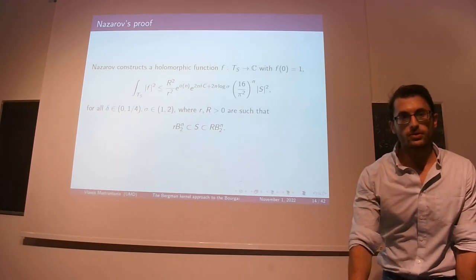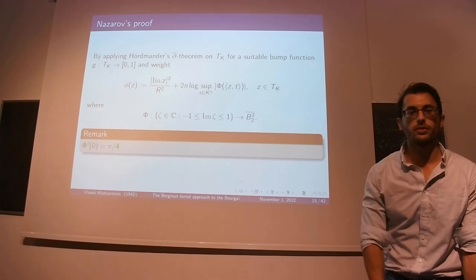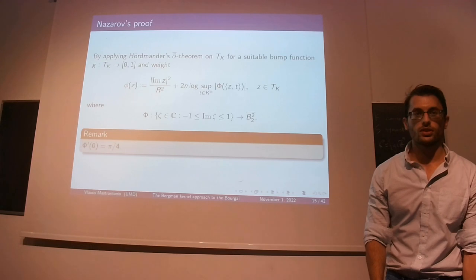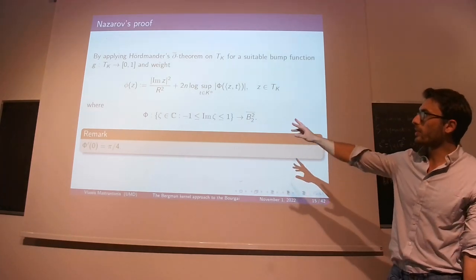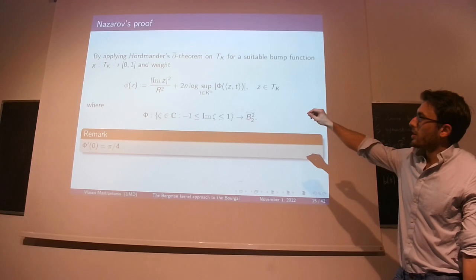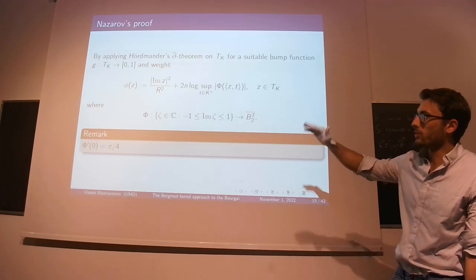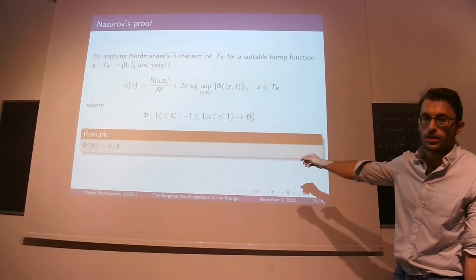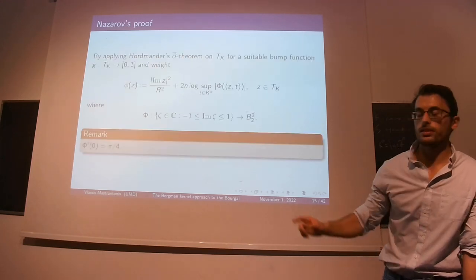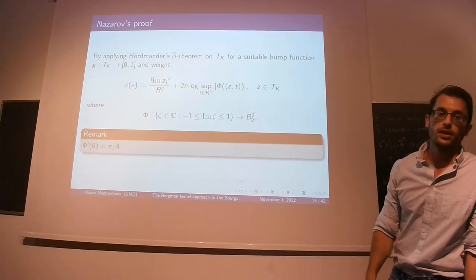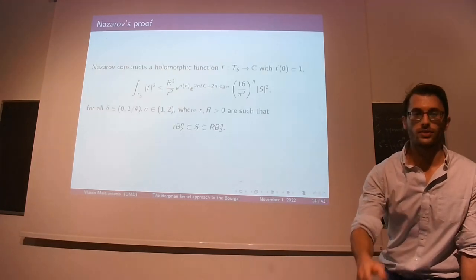To get this L2 bound on F, Nazarov applies Hörmander's theorem on the tube domain on some bump function, with a weight function given by small phi, where big Phi is the conformal map between the symmetric strip where imaginary values are between negative one and one, and the unit ball. The reason 16 over pi squared shows up is exactly that the derivative of this conformal map at the origin is pi over 4. If you take pi over 4 and square it, you get pi squared over 16, and then inverting gives 16 over pi squared.